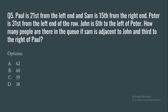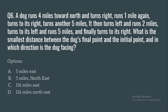Question 5: Paul is 21st from the left end and Sam is 15th from the right end. Peter is 31st from the left end of the row. John is 6th to the left of Peter. How many people are in the queue if Sam is adjacent to John and third to the right of Paul? Options: 42, 40, 39, or 38.